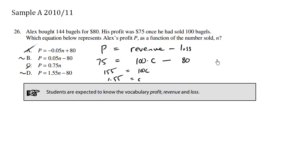So now that we've solved for C, we know what profit is. Profit is equal to revenue. The revenue is how many items we sell, which is N, times the cost of each individual item, which is 1.55, since we solved for C, minus the actual loss, which is 80. We bought all our materials for $80. So here is the profit formula, and the answer here is D.